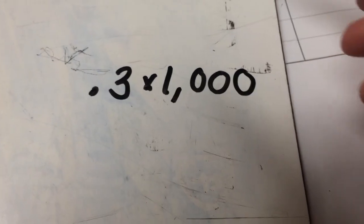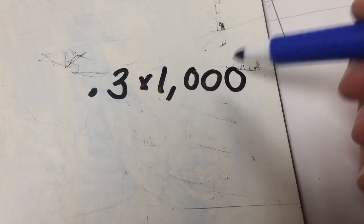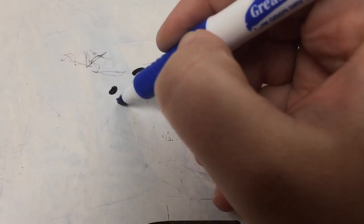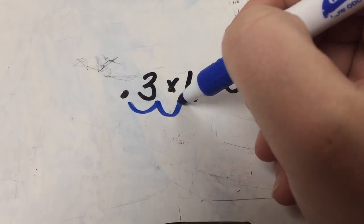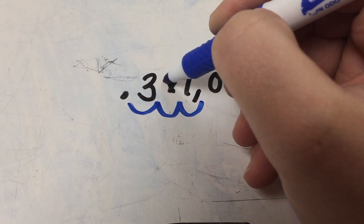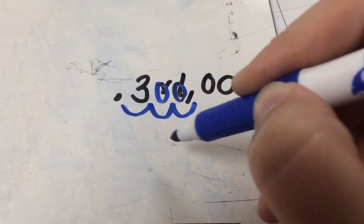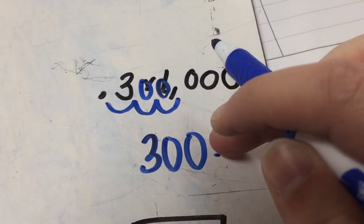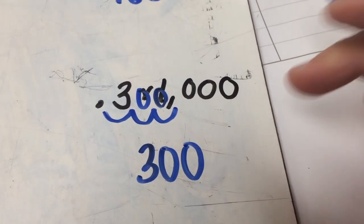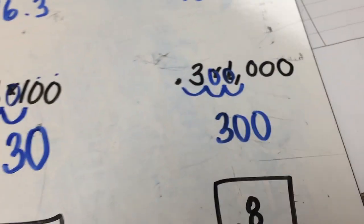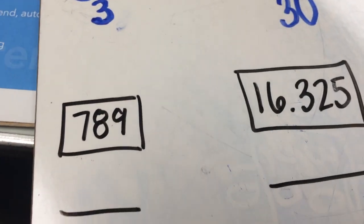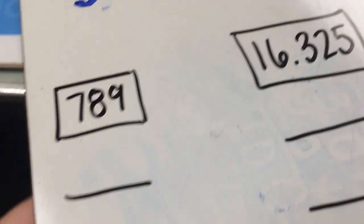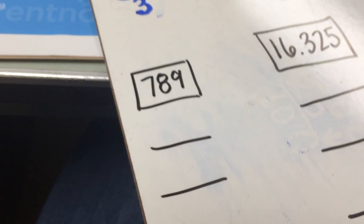So when you do it for 1,000, same thing. We have three zeros and we only have one digit, but we have to go two, three more times, so we really need to get two zeros in there. And our answer is going to be 300. Remember, you don't need that decimal at the end because there's nothing after it. Now we're going to do practice problems. I'm on page 289. I'm going to do the green problems with you so you can do the black ones on your own.